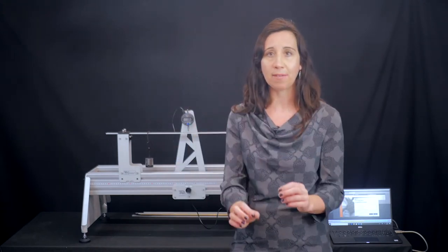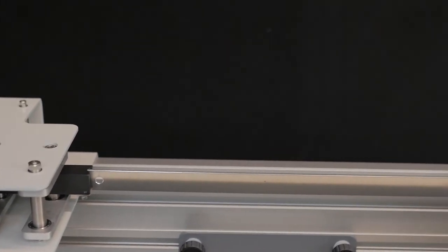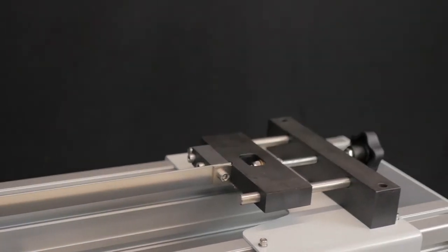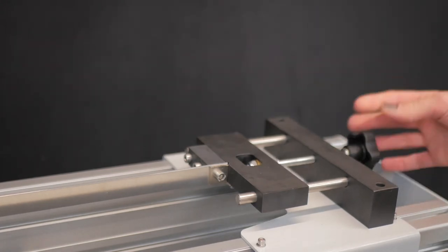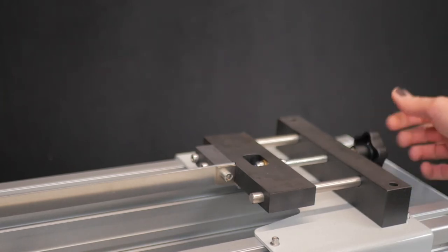Moving to the buckling of struts experiment, the STS-12. Here you're able to teach students about Euler buckling loads, the relationship between strut length and collapse load, and the impact of using various end fixings. We have a setup here that looks at the use of pinned ends.